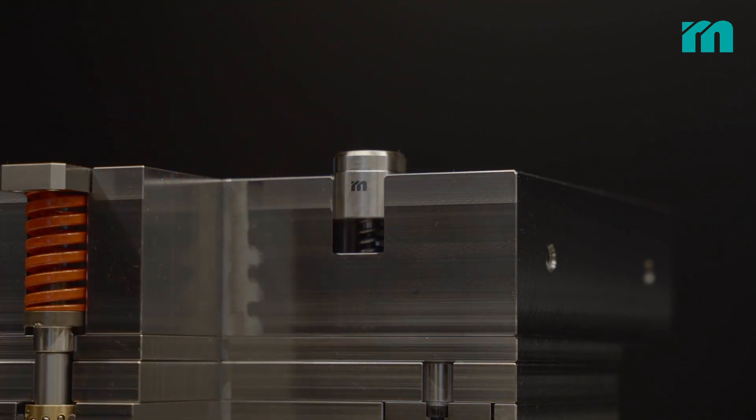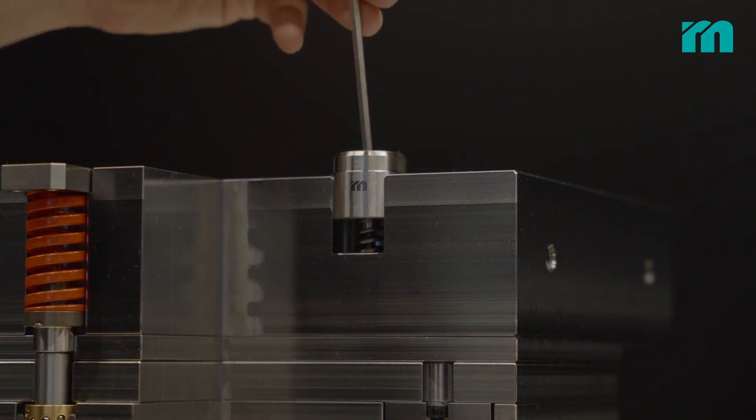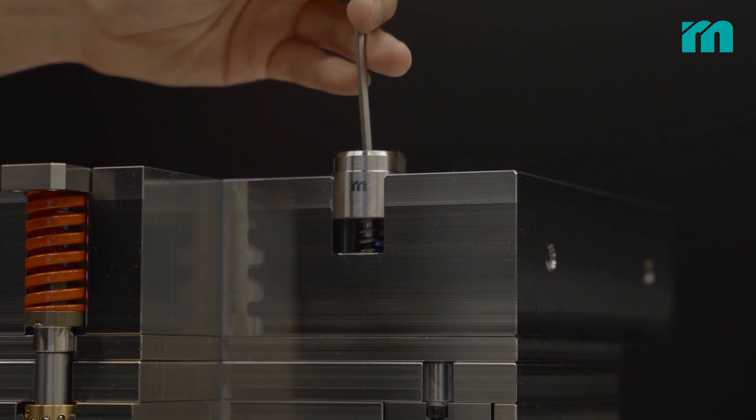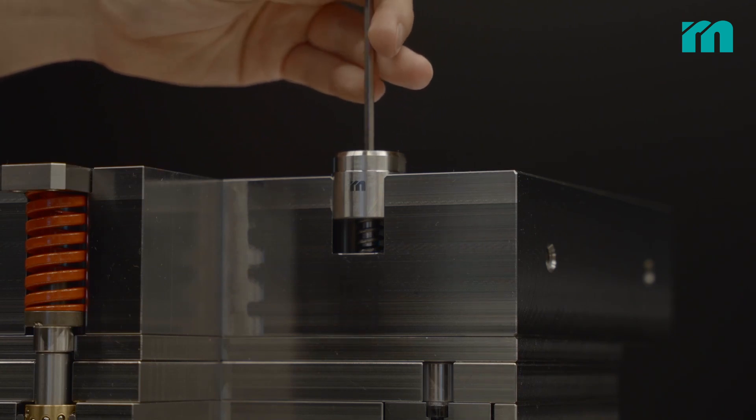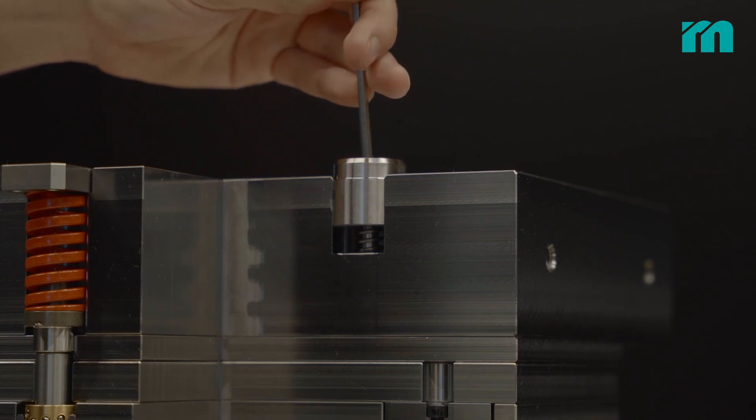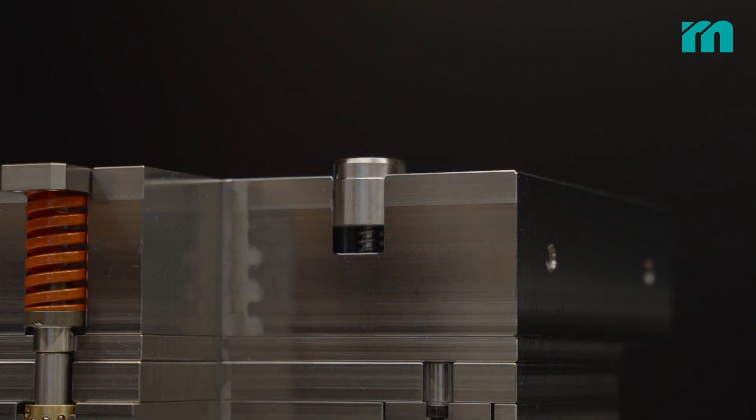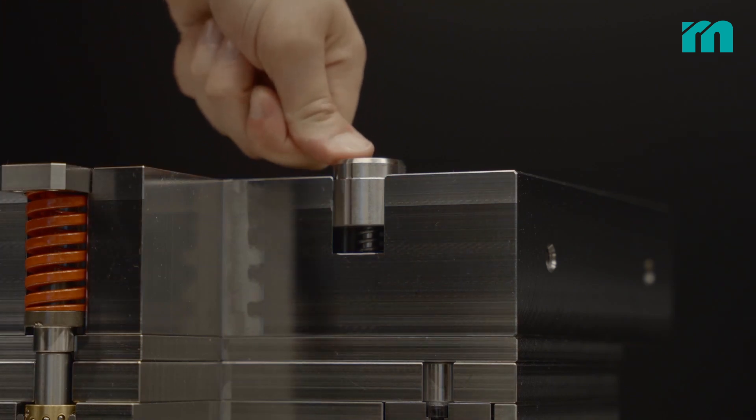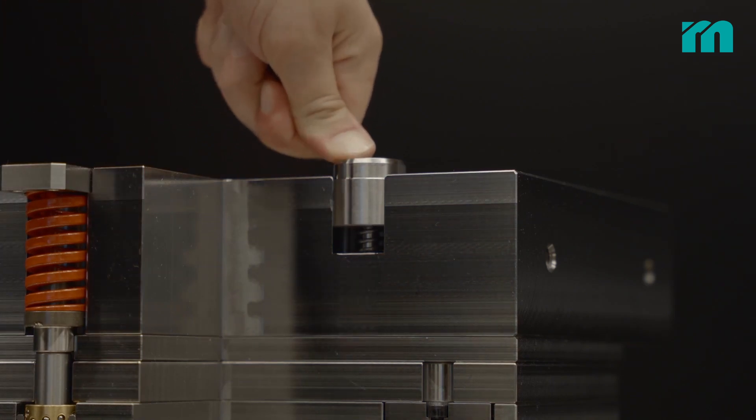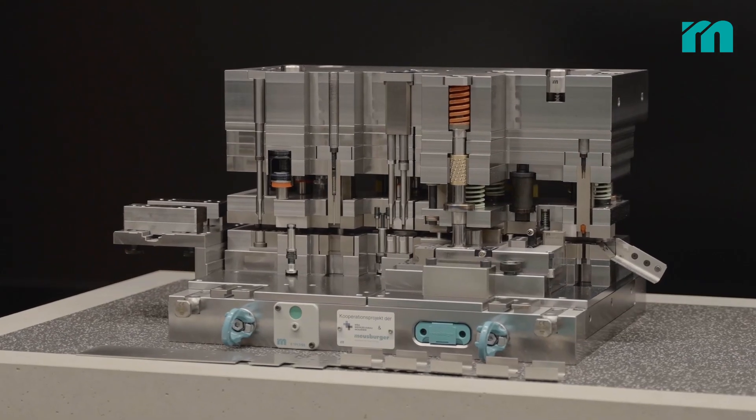All these steps in case of individual manufacture generate high costs. In contrast, the purchase price of a standard part is around 30 euros. This already includes accessories such as the shoulder screw and the spring. The key word is once again standardization.